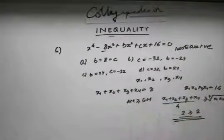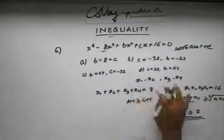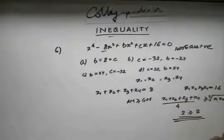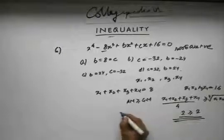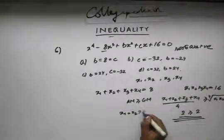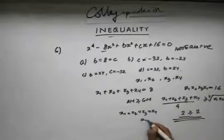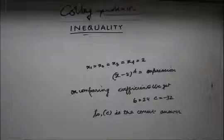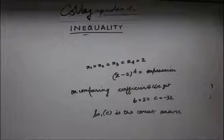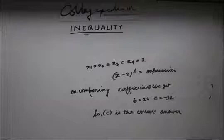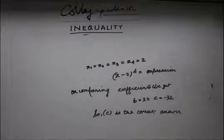AM equals GM — what does this imply? It implies that all the roots are equal: x₁ = x₂ = x₃ = x₄. Since their sum is 8, each root equals 2. Now since all roots are equal to 2, the expression becomes (x − 2)⁴. Expanding this and comparing coefficients gives b = 24 and c = −32. So the correct option is C.